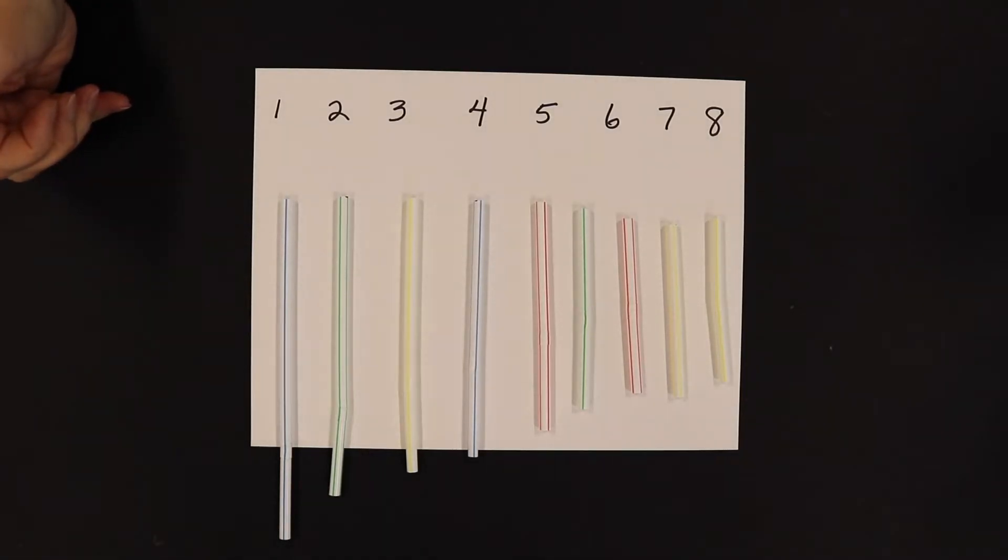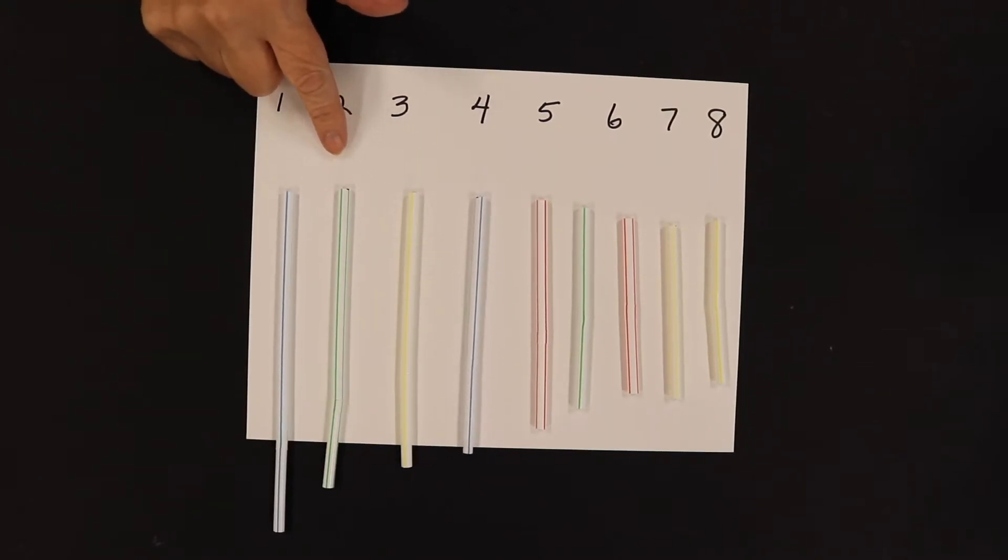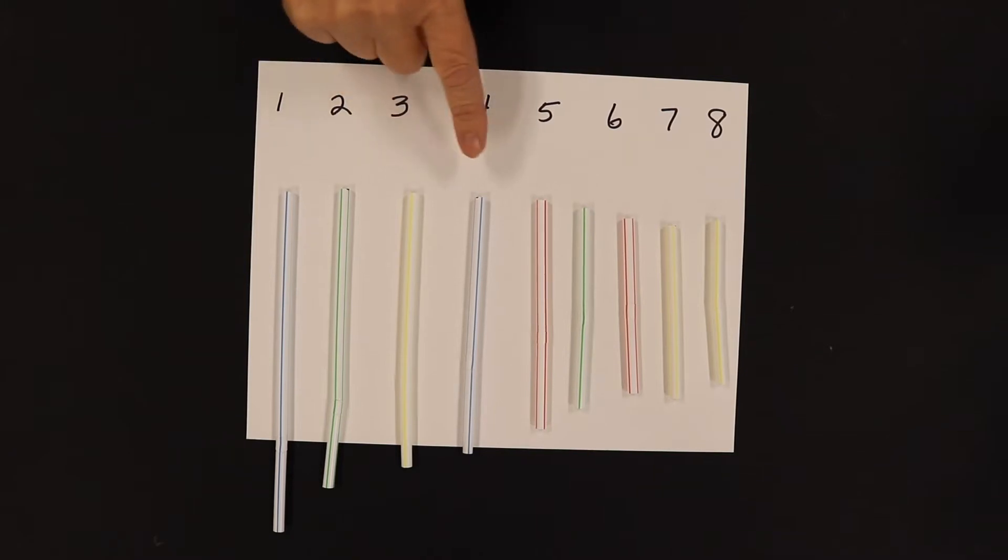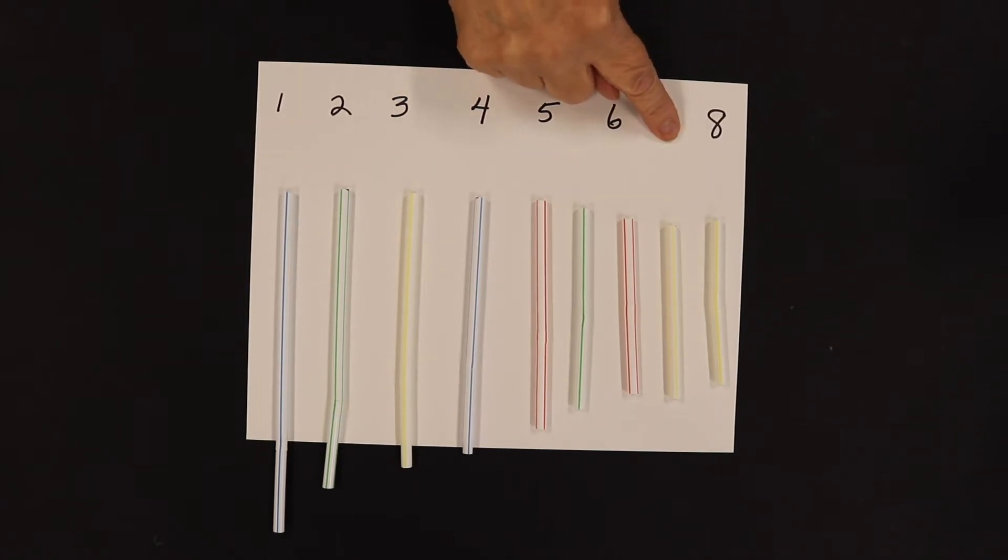The next step is to measure and cut the straws. The sizes should be 19.5 centimeters, which would be your first and longest straw, 17 for the second, 15.5 centimeters for the third, 14.5 centimeters for the fourth. The fifth one would be 13 centimeters. The sixth one is 11.5 centimeters. The seventh one would be 10 centimeters and your last and shortest straw would be 9.5 centimeters.